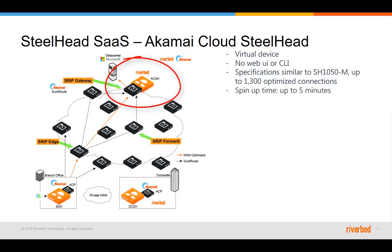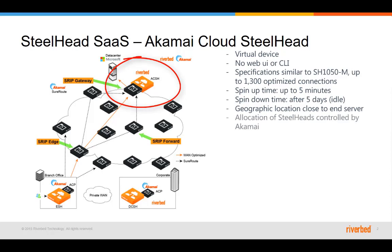The ACSH specifications are equivalent to a Steelhead 1050M, which can optimize up to 1300 connections. It can take up to 5 minutes for the ACSH to spin up, and after an idle time of 5 days the ACSH will spin down. The geographic location of the ACSH will be as close as possible to the destination server. The allocation of the ACSH is done automatically by Akamai and cannot be controlled by the end customer. New instances will be deployed as needed based on the number of connections.